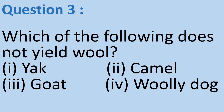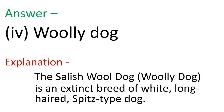Question 3: Which of the following does not yield wool? Option 1: Yak, Option 2: Camel, Option 3: Goat, Option 4: Woolly dog. Answer: Option 4, woolly dog. The Salish wool dog or woolly dog is an extinct breed of white long-haired Spitz-type dog, and its hair is not used as wool.